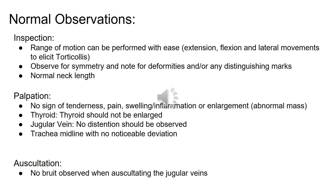Examination of the neck includes assessment of the size and position of anatomic structures, neck vessels, presence of head tilt, presence of masses or enlarged lymph nodes, and palpation of the thyroid gland. Normal observations under inspection: range of motion can be performed with ease; observe for symmetry and note any deformities or distinguishing marks. For palpation, no sign of tenderness, pain, swelling, inflammation, or enlargement. The thyroid should not be enlarged. There is no distension of the jugular vein. The trachea is midline with no noticeable deviation. For auscultation, no bruit observed when auscultating the jugular vein.